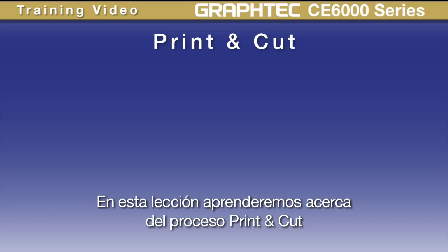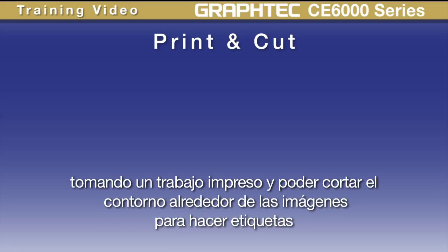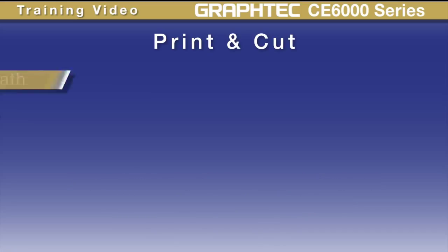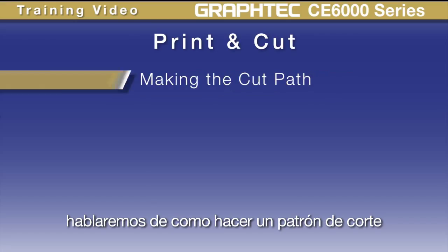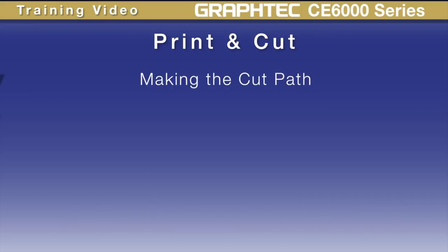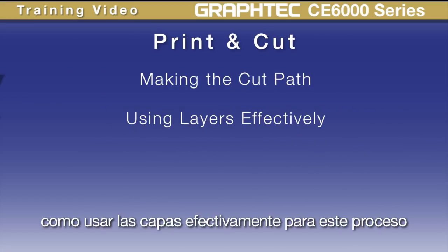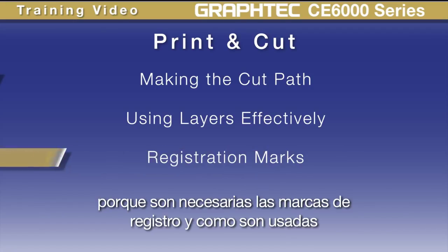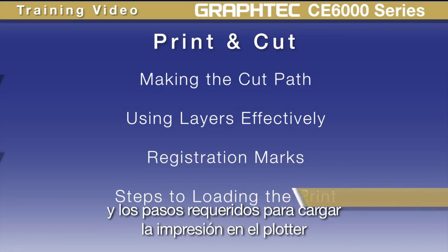In this lesson, we'll learn about the print and cut process — taking a print off your printer and having the CE6000 contour cut around the images on the print for making decals. We'll cover how to make a contour cut path, how to use layers effectively for this process, registration marks, why they are needed and how they are used, and then the steps required to load the print onto the cutter.